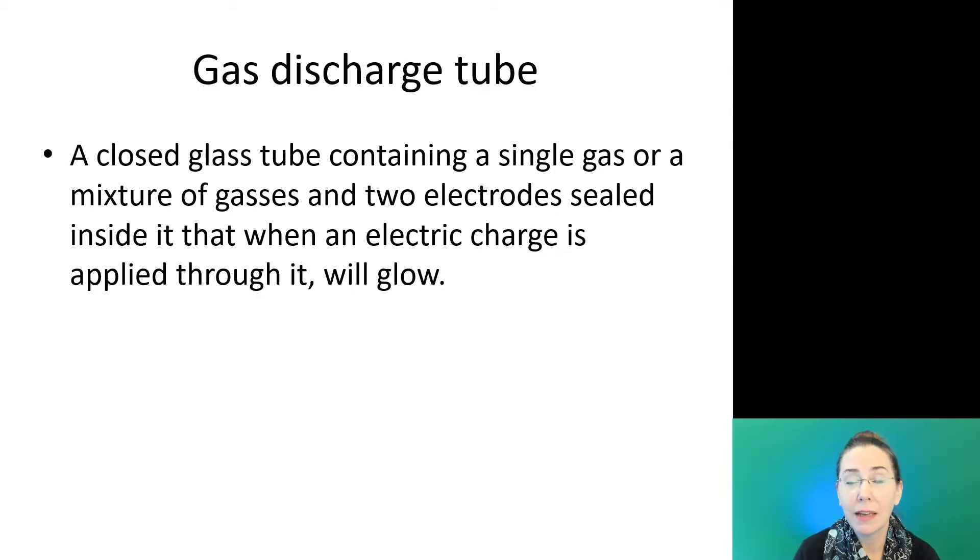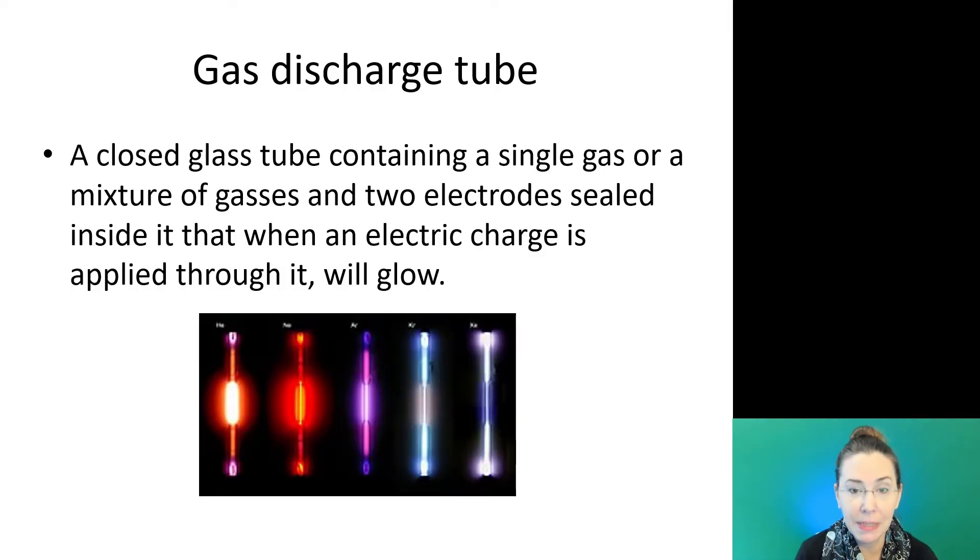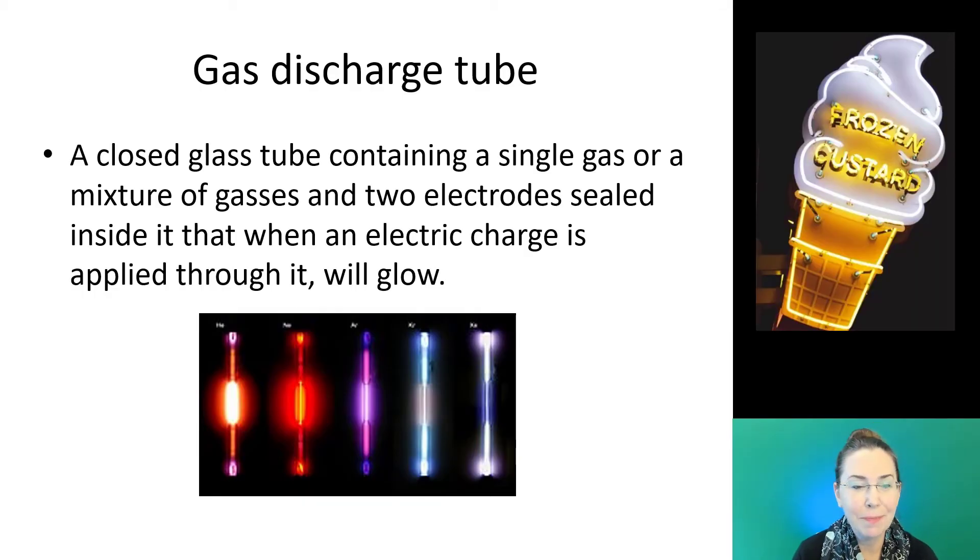We can explore these by looking at gas discharge tubes. A gas discharge tube is a closed glass tube that contains a single gas or mixture of gases and two electrodes sealed inside it, and when an electric charge is applied through it, it will glow. This is essentially the way that neon lights work.